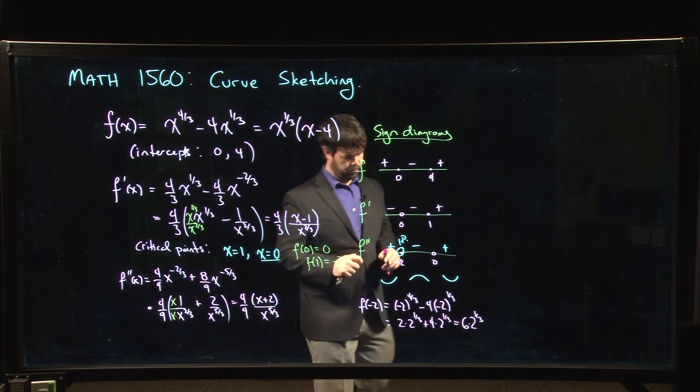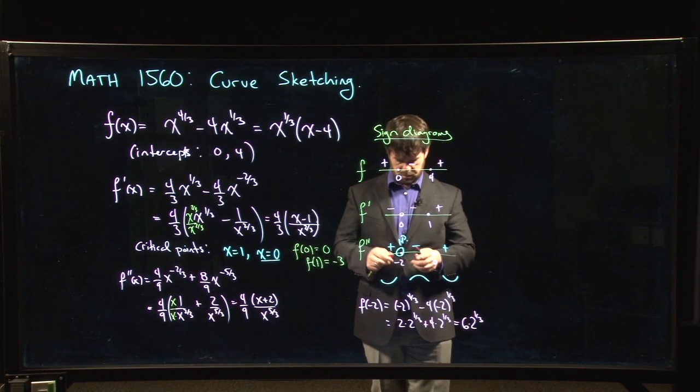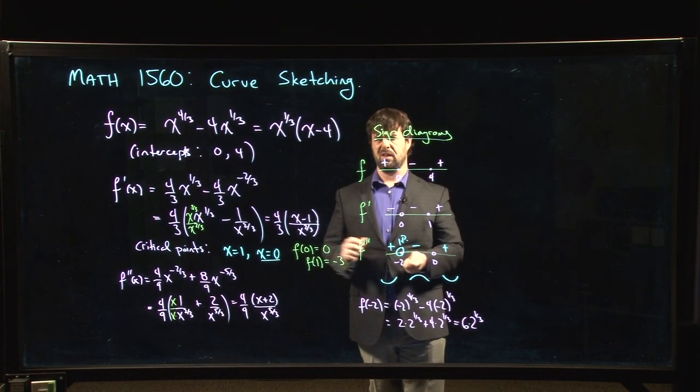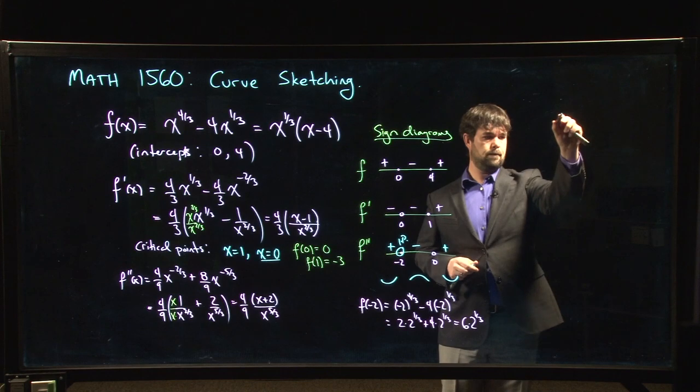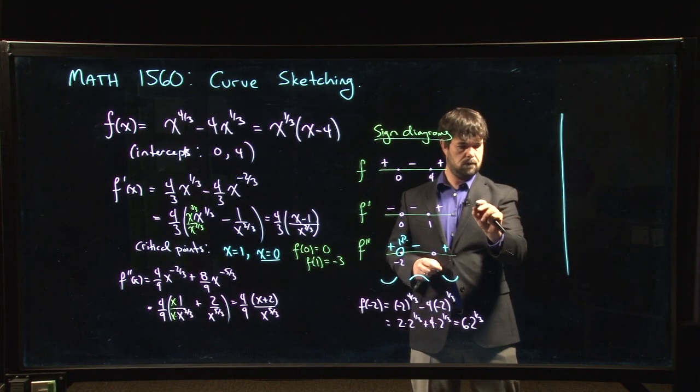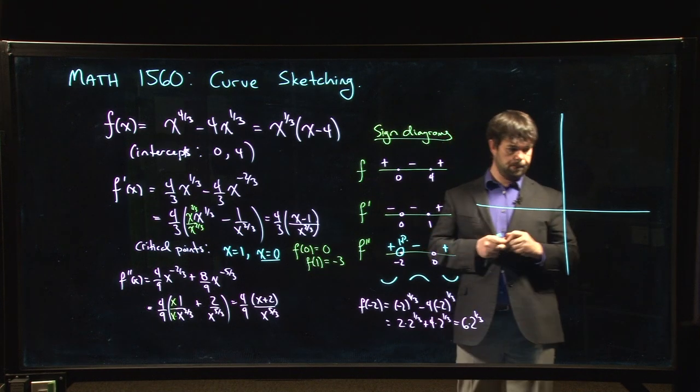Which is, I don't know where that is, somewhere around 8 maybe. Okay, exact value is not important. Let's sketch our graph. Okay, so we're going to plot off our intercepts.